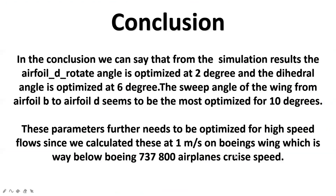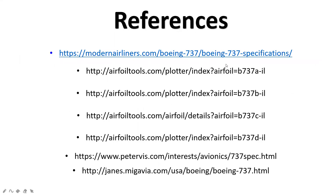In conclusion, from our simulation results: the airfoil D-rotate angle is optimized at 2 degrees, the dihedral angle is optimized at 6 degrees, and the sweep angle from airfoil B to D is most optimized at 10 degrees. These parameters need further optimization for high-speed flows, since the Boeing 737 cruise Mach number is approximately 0.8. These are the references used for obtaining the airfoil dimensions and for the airfoil plotting. Thank you very much.